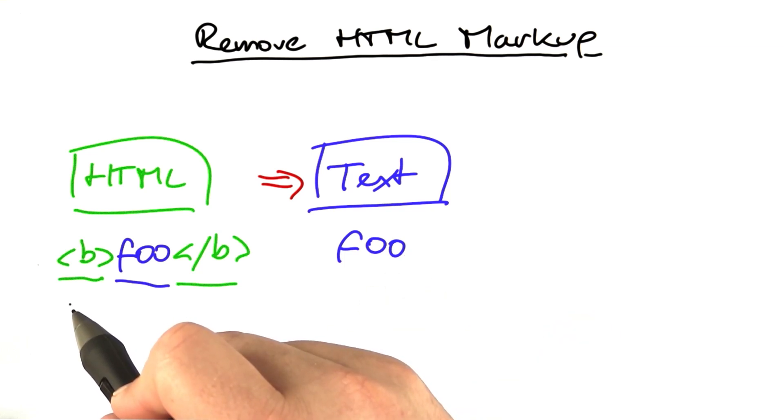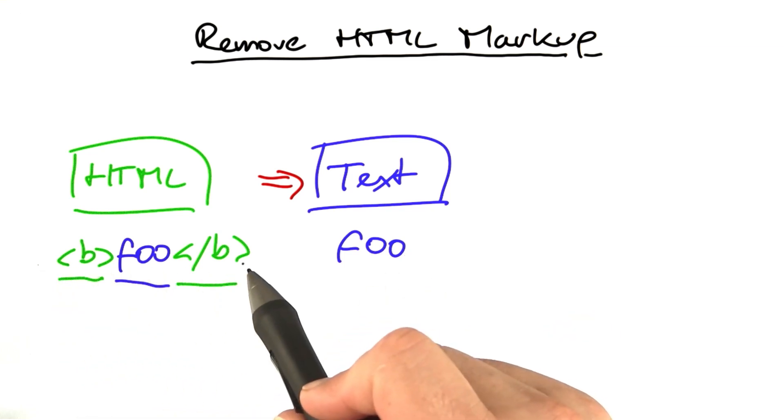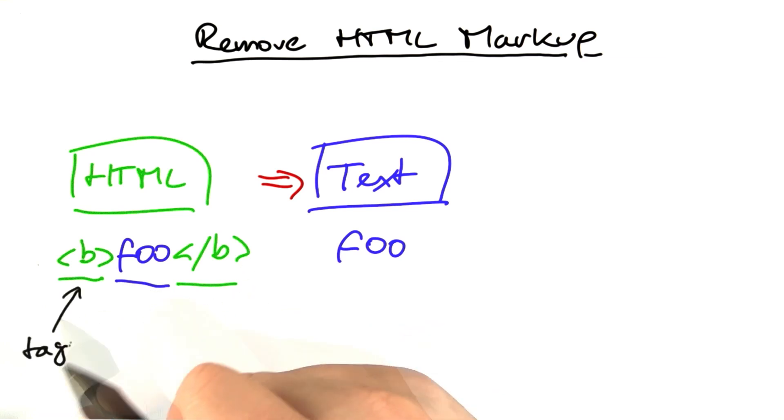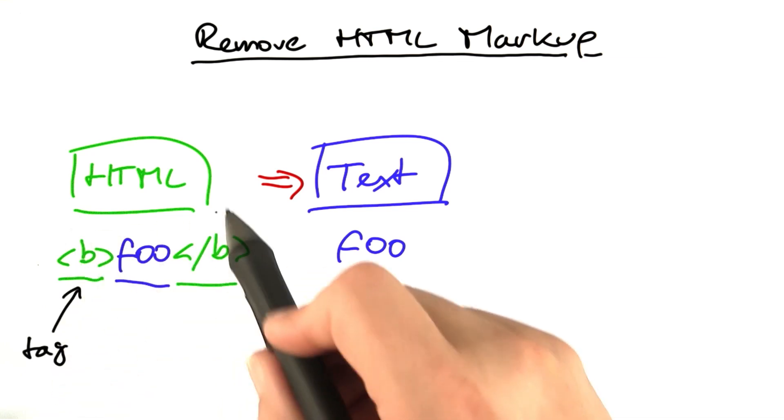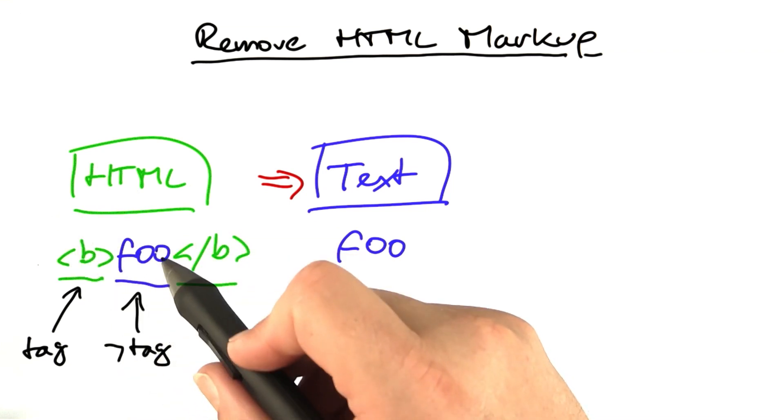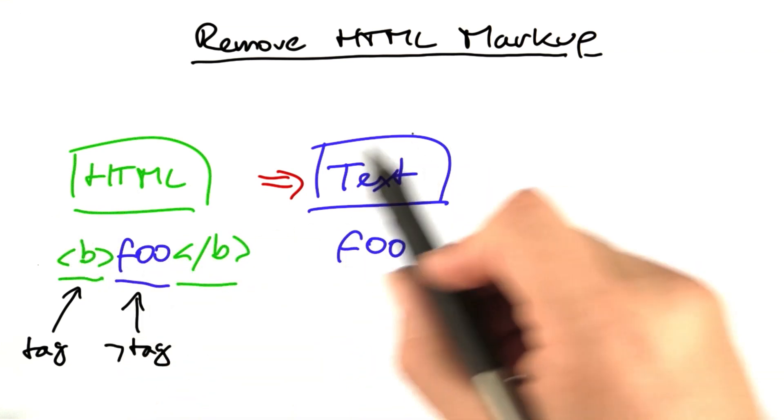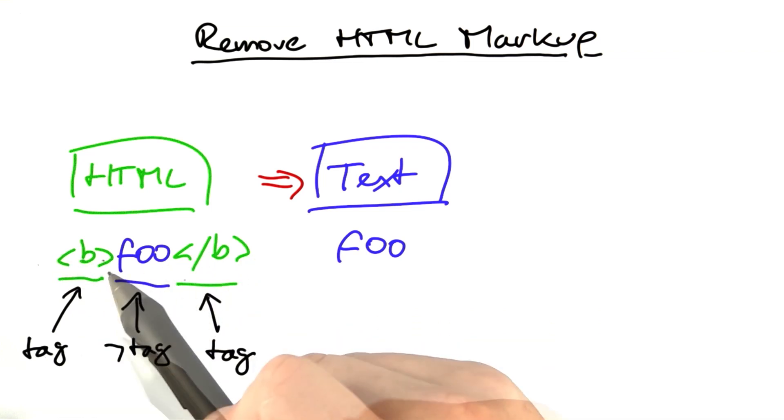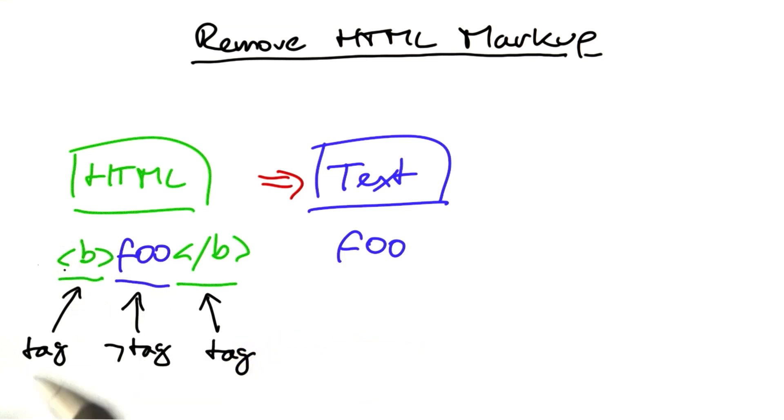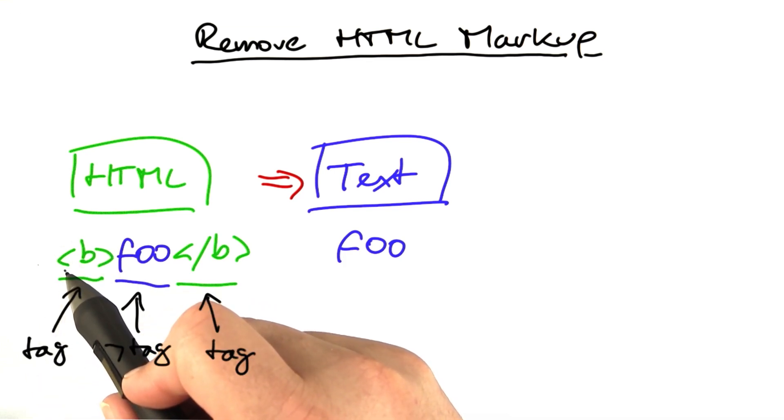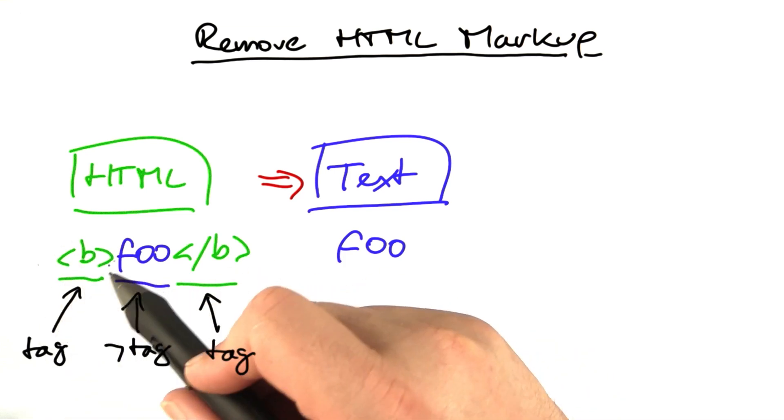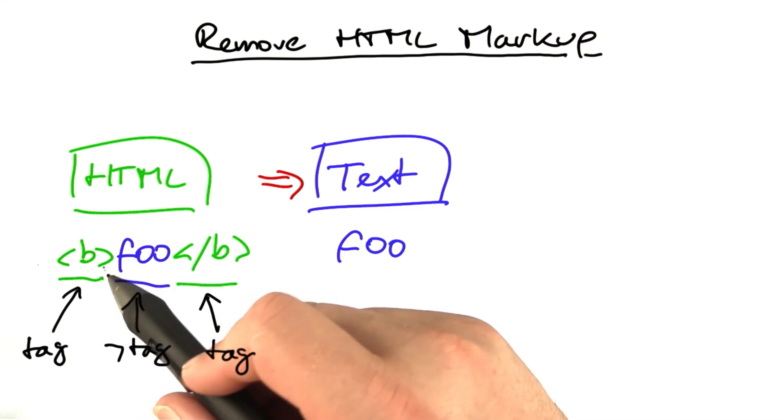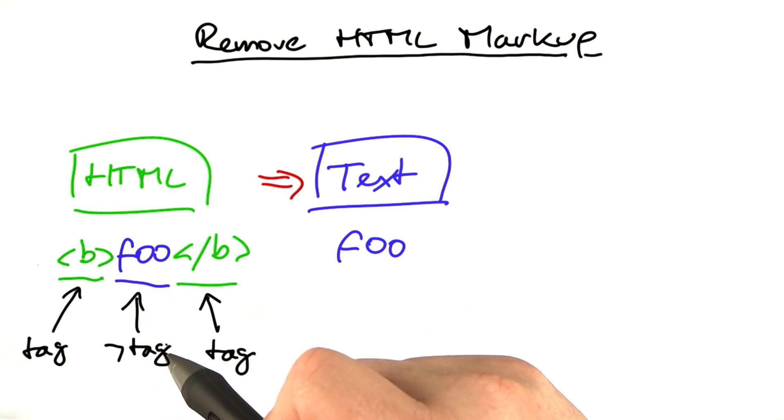How do we do this? A simple way is to process the HTML input character by character and distinguish two modes. When we are in tag mode, we ignore all input. When we are in non-tag mode, we add all input to the output. And we switch between these modes, tag and non-tag, by looking at these angle brackets. When we see the beginning of an HTML markup, as you can see in this less than sign, we enter tag mode. When we see the end of an HTML markup, that is, a greater sign, we exit tag mode.